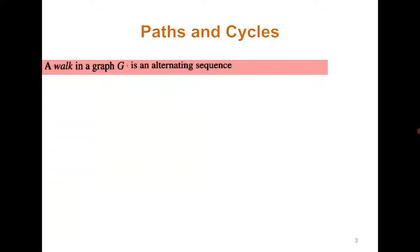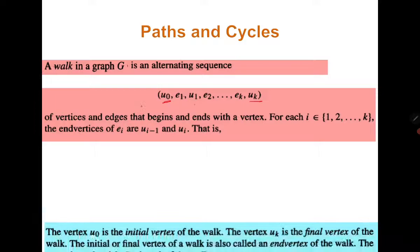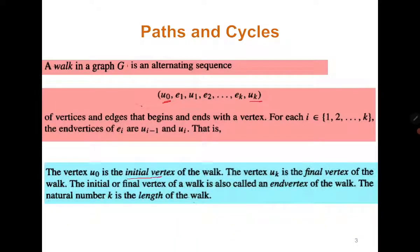A walk is an alternating sequence of vertices and edges that begins and ends with a vertex. Here u0, u1 are all vertices; it ends with a vertex and in between there are edges. So u0 is the initial vertex of the walk, uk is the final vertex, and k is the length of the walk — k represents the number of edges.